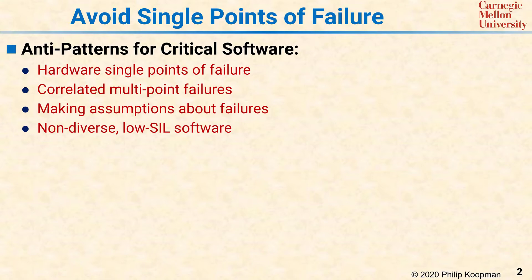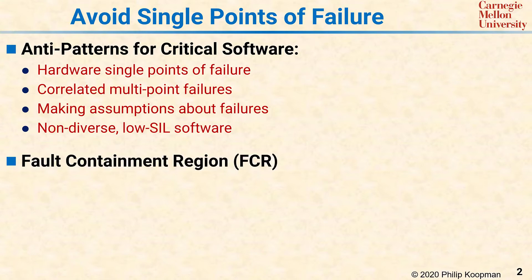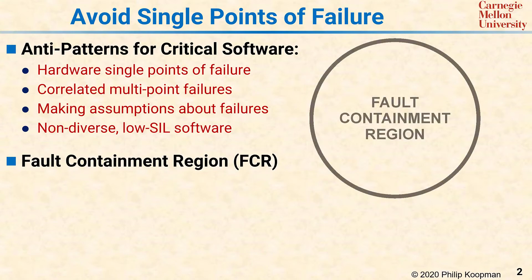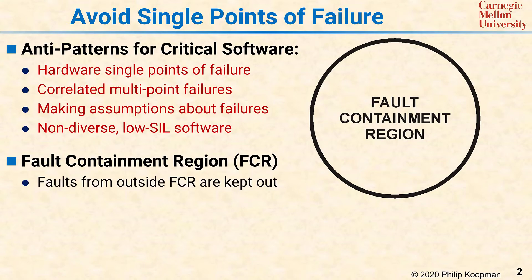A general way to think about single points of failure is that your system is divided up into one or more fault containment regions, abbreviated as FCR. The first half of the definition of an FCR is that faults from outside the region stay out. That means, for example, corrupted or invalid input values have to be caught at the FCR boundary and cannot cause components inside the FCR to crash or otherwise fail.